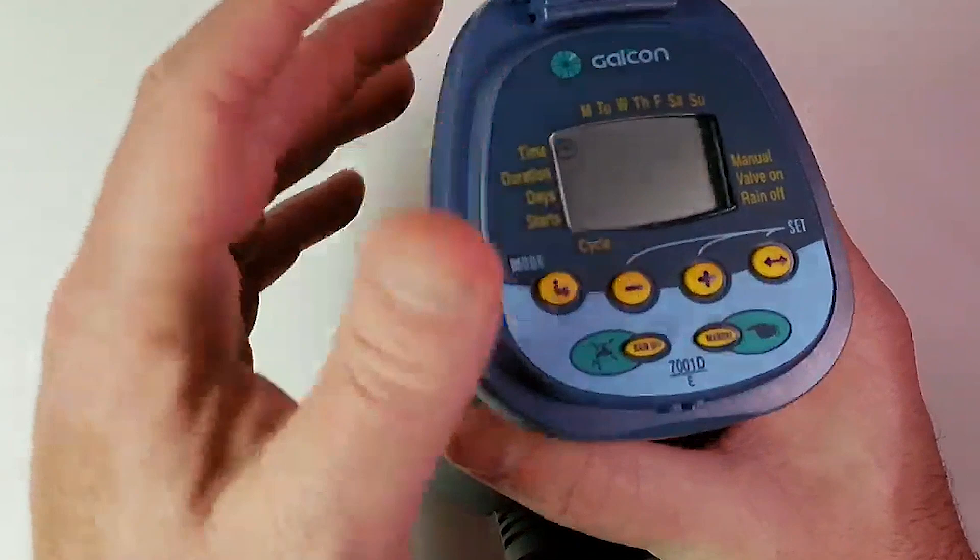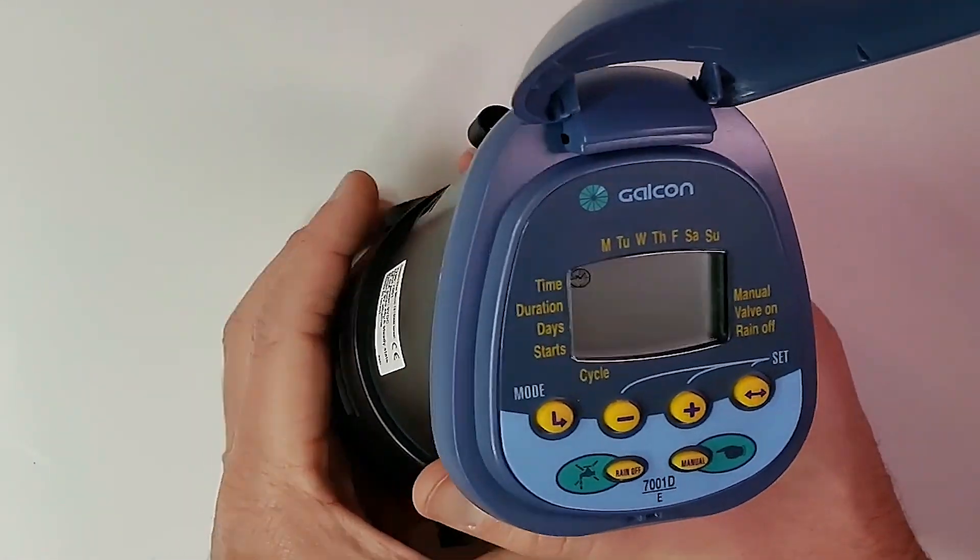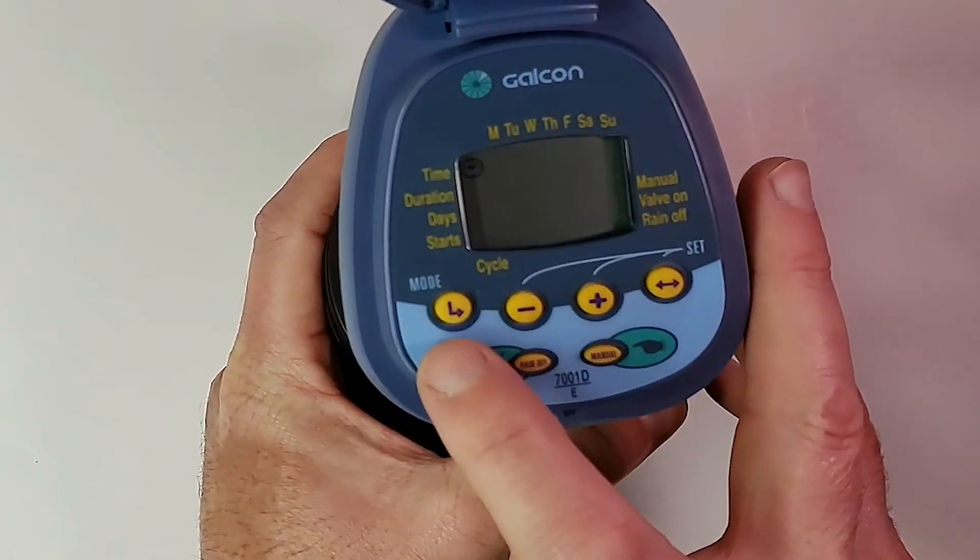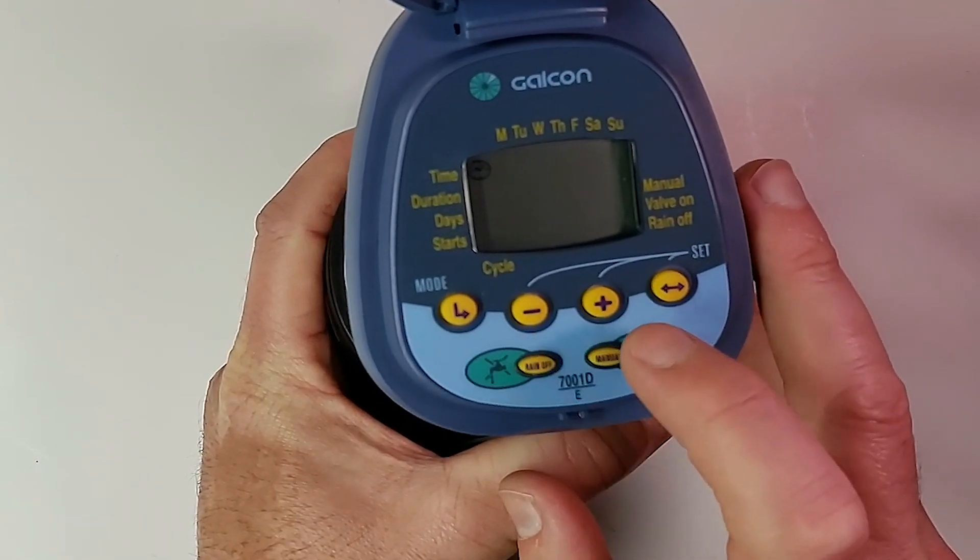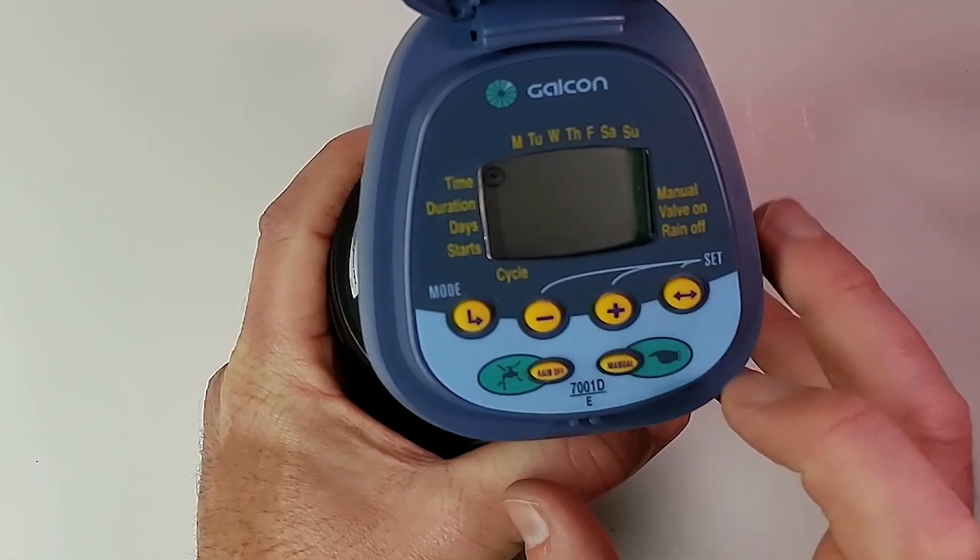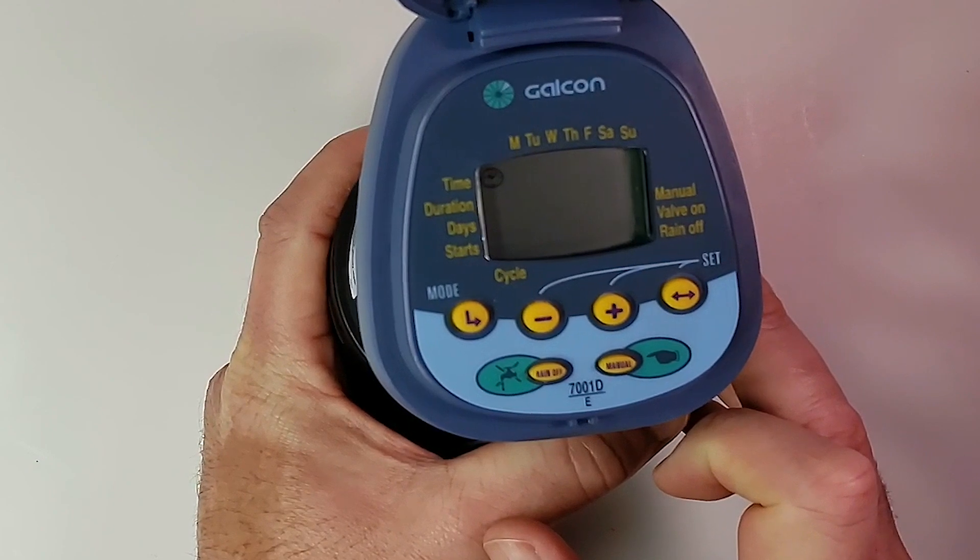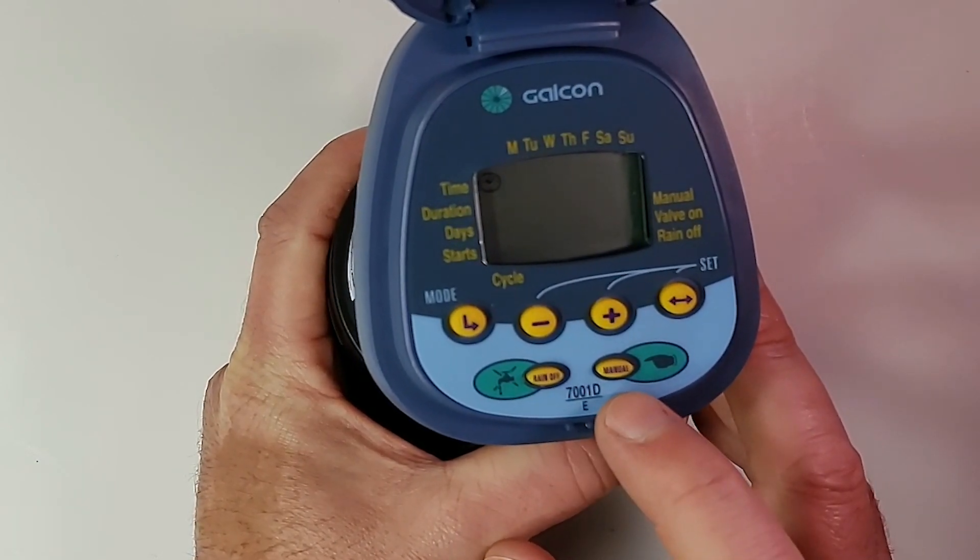When we open up the top, we see our enter button, minus button, plus button, and our set button or right and left arrow. Then we also have our rain off and our manual button.